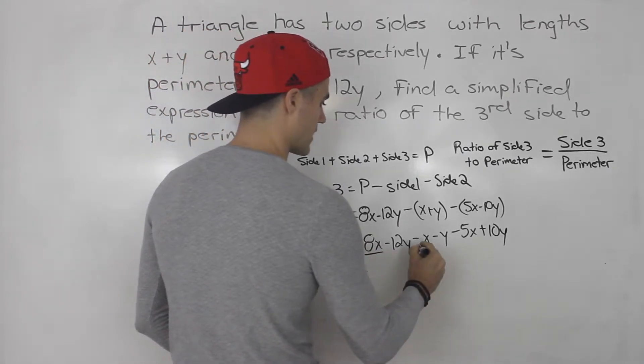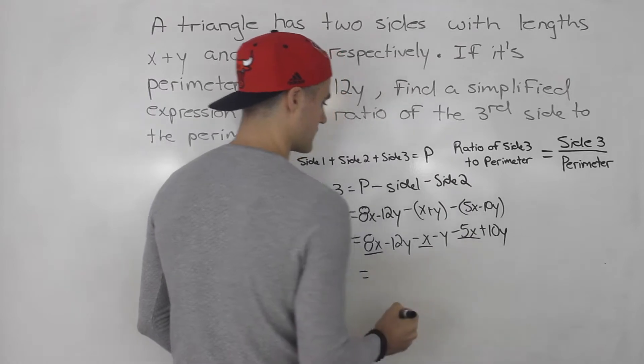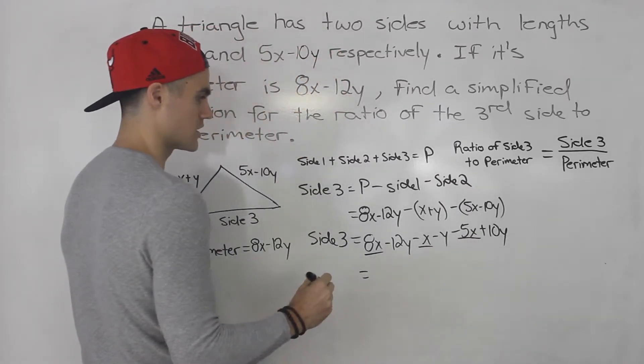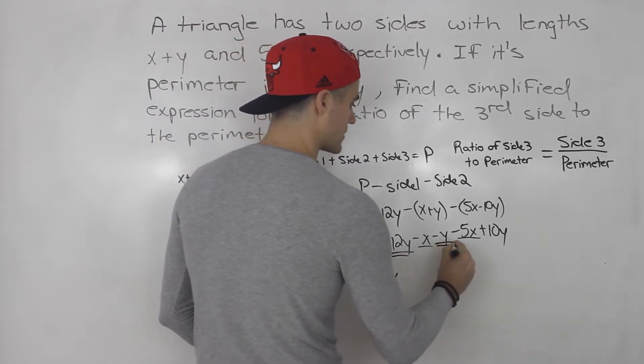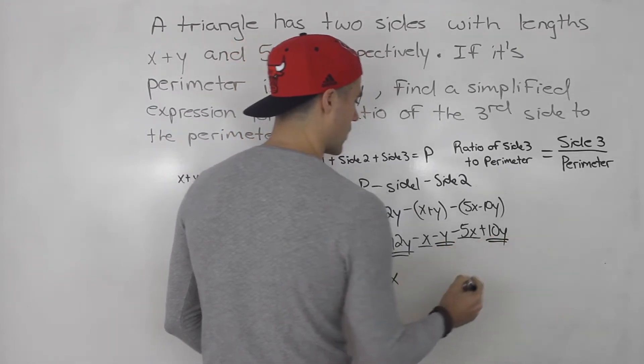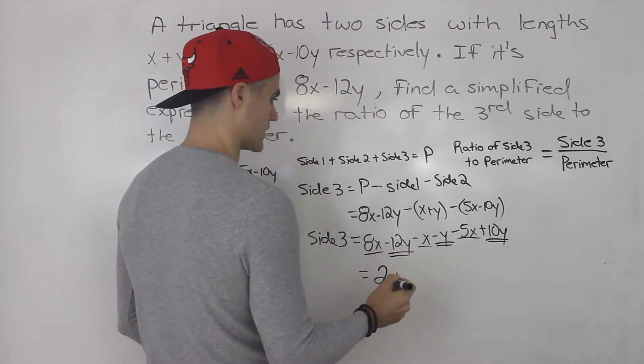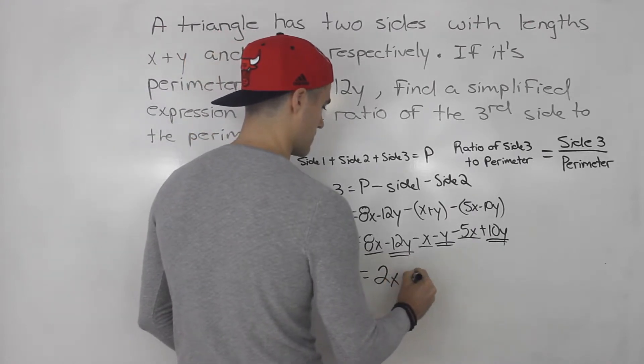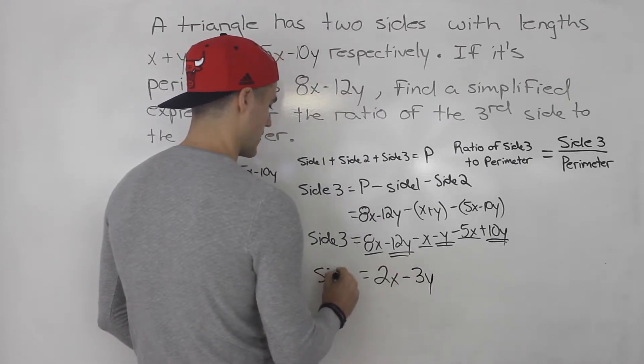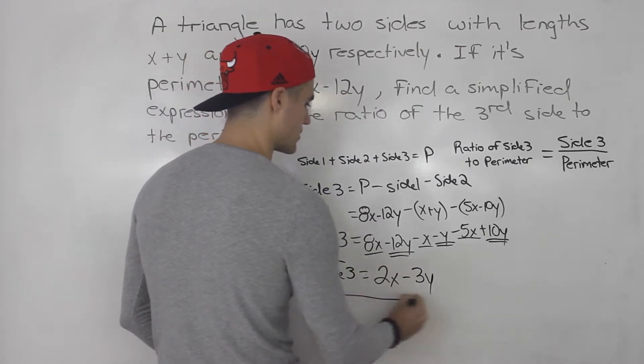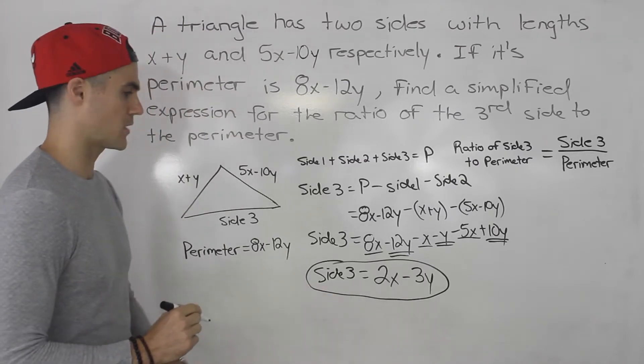So we've got side 3, and then we've got 8x minus x minus 5x, those are the like terms, so that would give us 2x. And then we've got minus 12y minus y plus 10y, that would give us minus 3y.